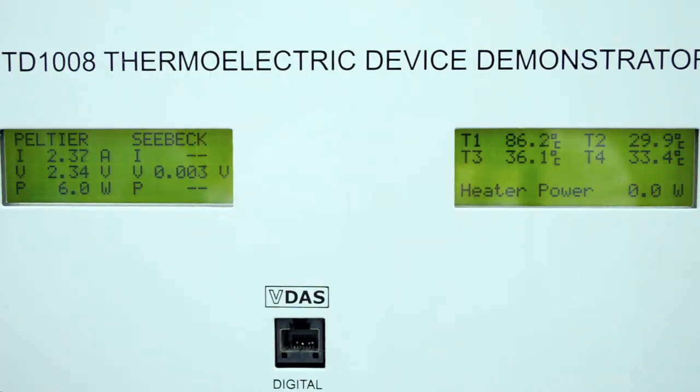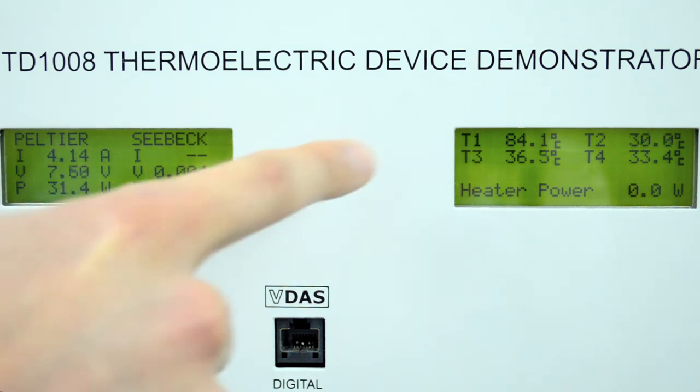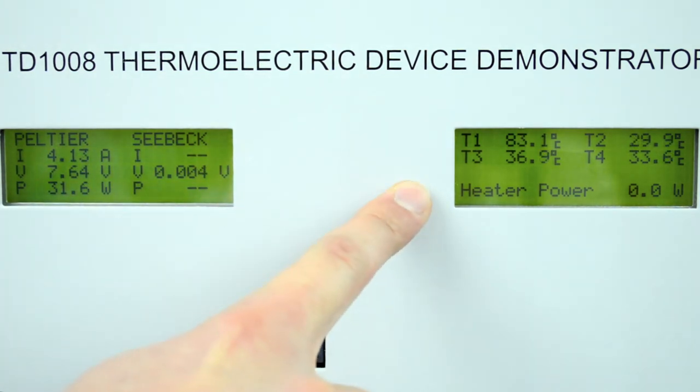Clear multi-line digital displays show all the temperatures and electrical measurements around the device, such as voltage, current and power.